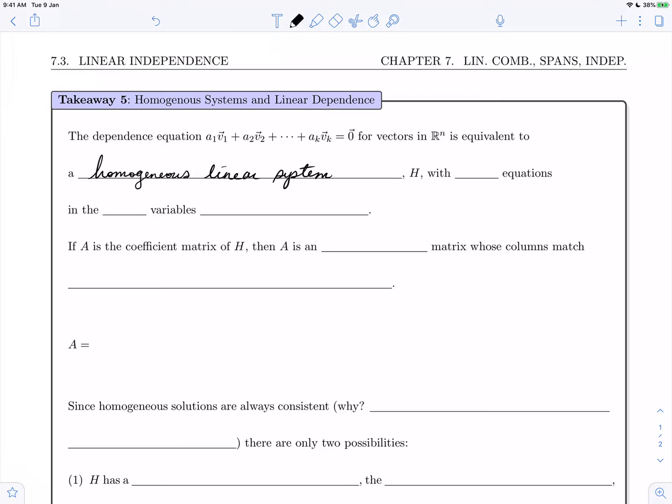This system H has n equations in k variables. The unknowns of the dependence equation are the coefficients a1, a2, up through ak.